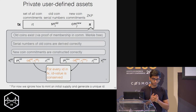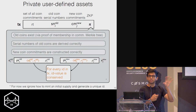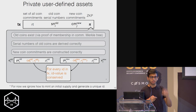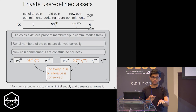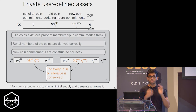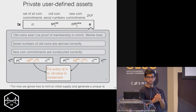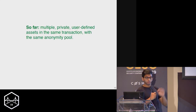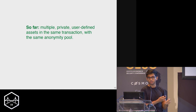Because the zero knowledge proof is zero knowledge, the transaction itself reveals no information about the assets involved, the values involved, or the sender or receiver — all that information is hidden. Another node looking at the transaction will only see that some serial numbers are produced and some commitments are there, but they won't learn anything about the concrete assets or values. They will know that value is conserved and we're not making money out of thin air because of the soundness of the zero knowledge proof.